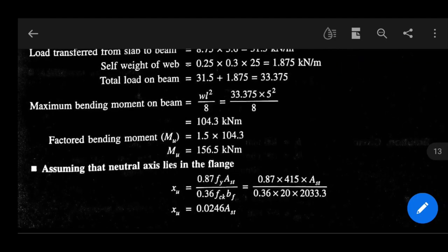So for that, XU equals 0.87 FY into AST by 0.36 FCK into BF. That equals 0.87 into 415 into AST by 0.36 into 20 into 2033.3. So XU equals 0.0246 AST. Okay, this is the value of XU.